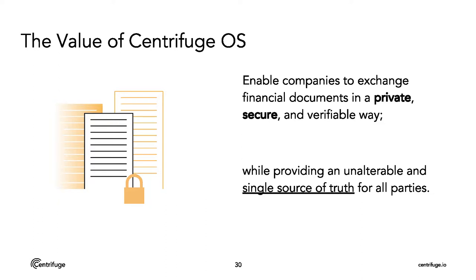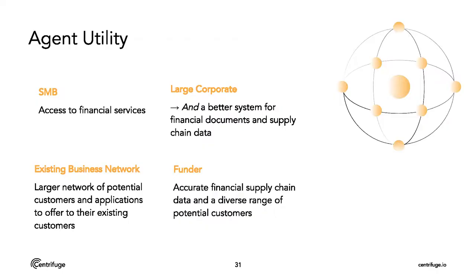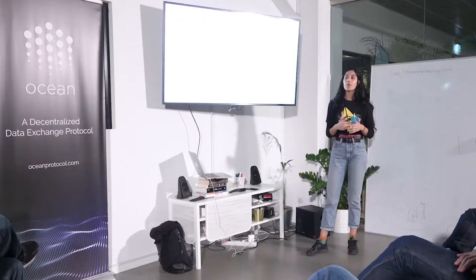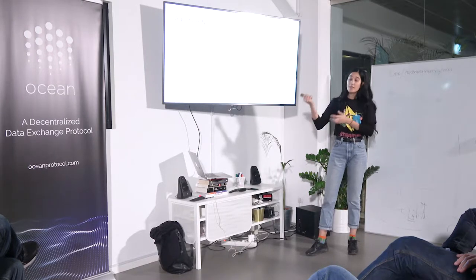So, what is the value of Centrifuge OS? We're enabling companies to exchange financial documents in a private, secure, yet verifiable way, and at the same time providing an unalterable single source of truth for all of the parties involved. A small or medium-sized business gets more access to financial services. This tea grower may not have had any bank that would give them the time of day before, but now that this bank has an unalterable source of truth for the data of this tea grower, they potentially get access to more financial services than they could have ever had before.